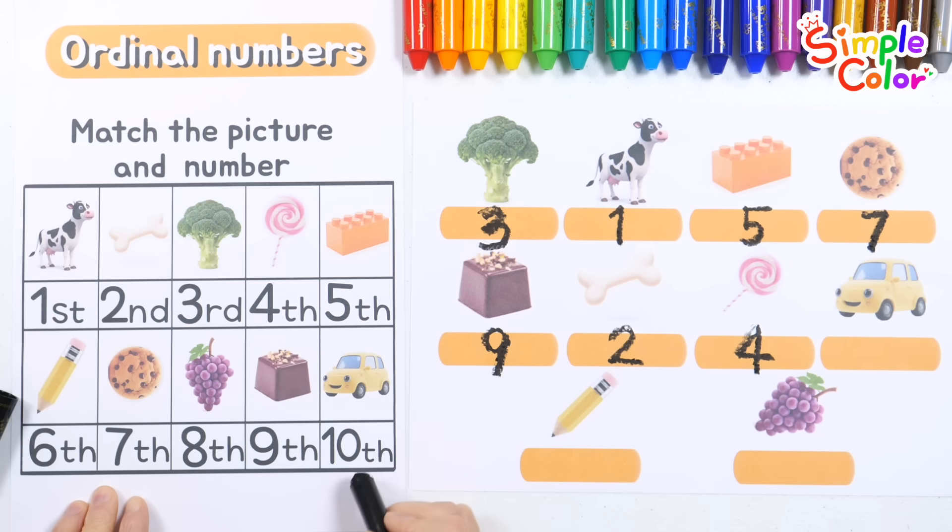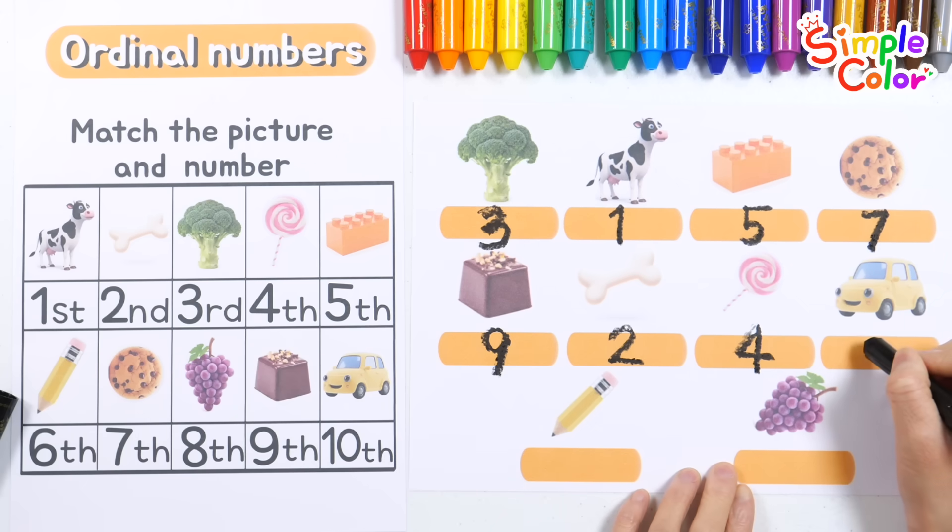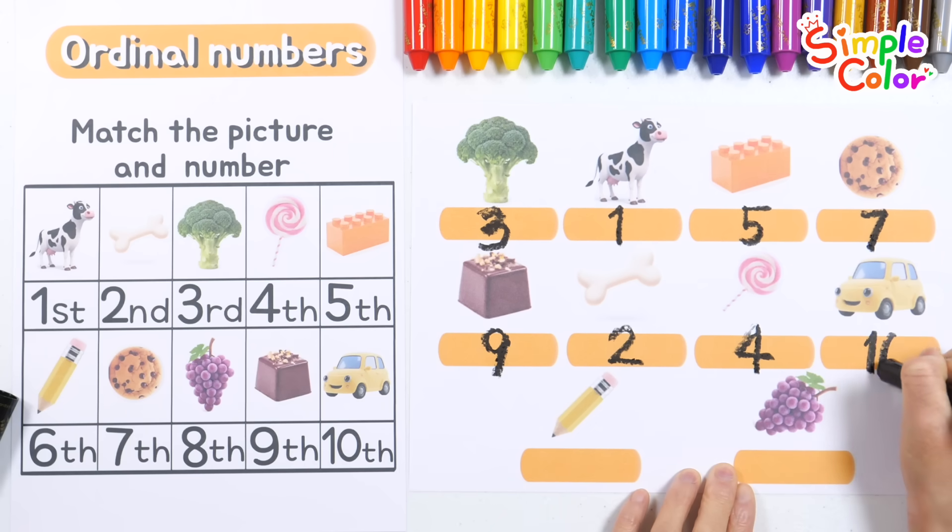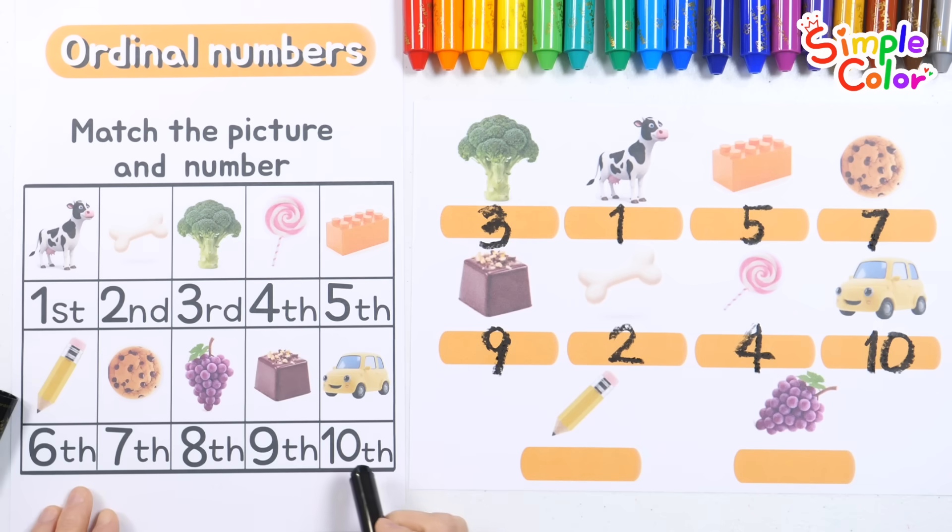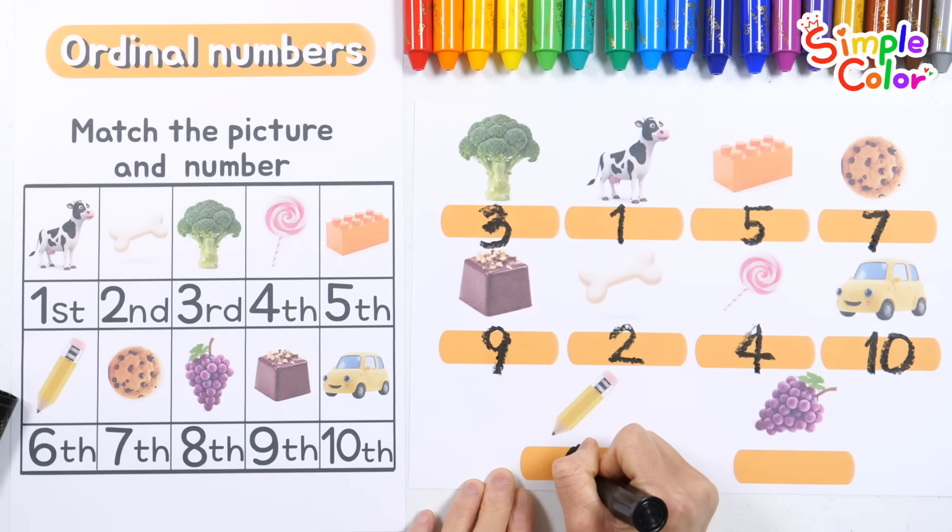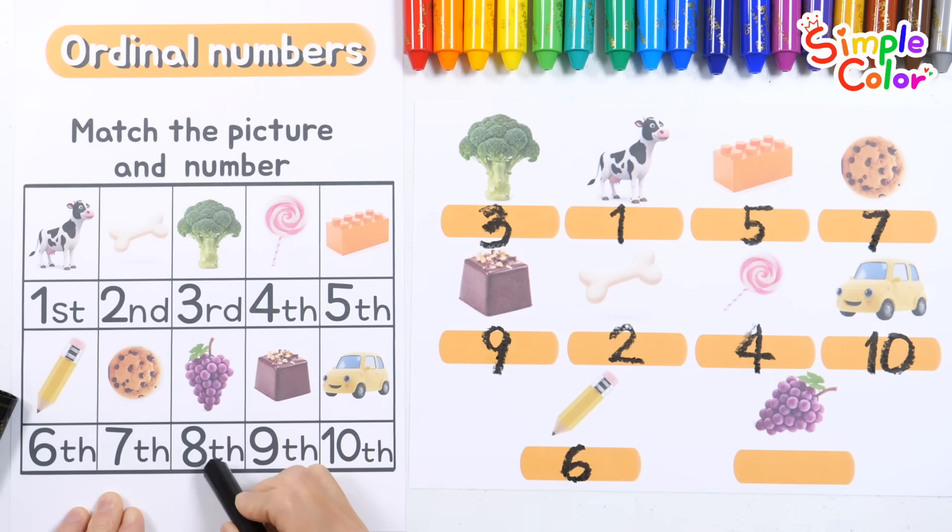The car was tenth. Ten. Let's find out which number the pencil was. Yes! The pencil was sixth. Six. Great job! And finally, the grapes were eighth. Eight. Excellent work!